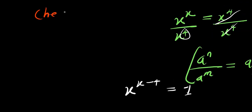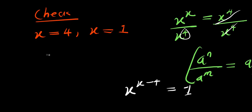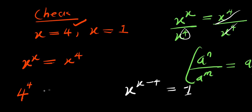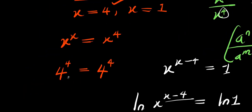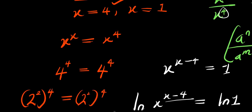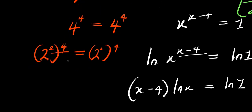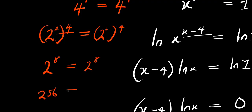Let's verify both solutions. The solutions are x equals 4 and x equals 1. Starting with x equals 4 in x to the power of x equals x to the power of 4: we have 4 to the power of 4 equals 4 to the power of 4. Since 4 is 2 squared, we get 2 to the power of 8 equals 2 to the power of 8, which is 256 equals 256. This is correct.